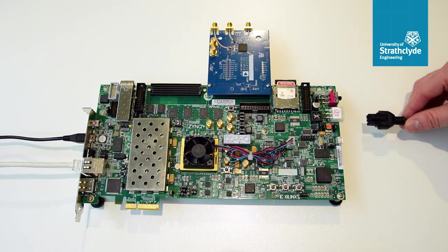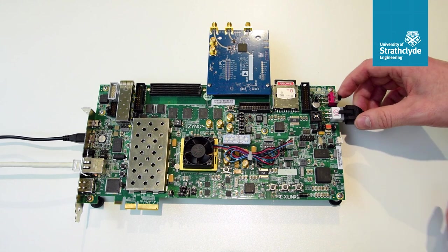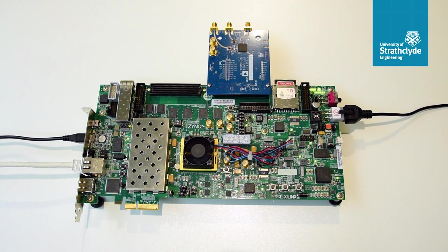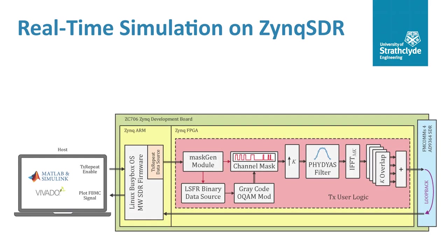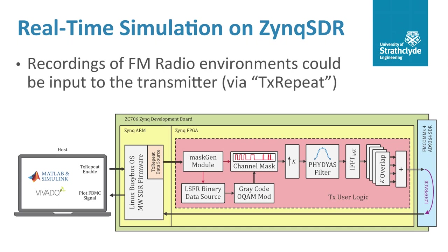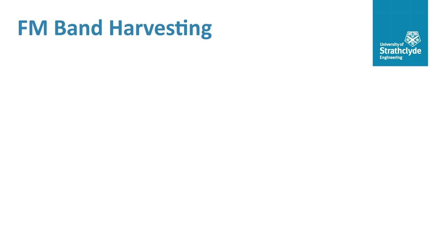Once the design was deployed to the radio hardware, a series of experiments were carried out to validate the design's DSA capabilities. Initially we wanted to confirm that the design programmed on the Zynq SDR was functioning as expected. We could do this by performing a real-time simulation on the hardware. During the simulation, the transmitter would be subjected to recordings of real FM radio environments and the spectra of the output FBMC signals it generated could then be examined, allowing us to confirm that it was successfully reconfiguring its channel mask to protect the primary user signals.